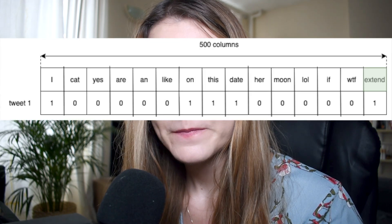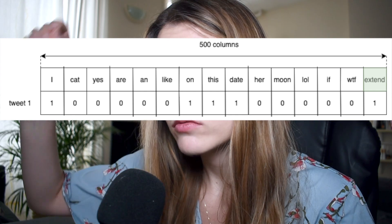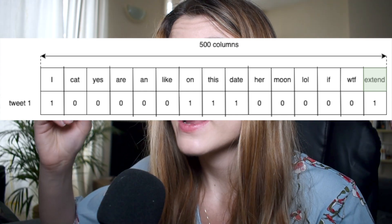So let's have a look at tweet number one. If the word 'extend' appears in that tweet, you mark how many times — once, so you put one. Then the next word, 'cat' — it doesn't appear in this tweet, so you put zero. You look at the next word and the next word and mark the frequency of how many times each word appeared in a tweet. You do it for all tweets — obviously not manually, you do it in Python — and that's how Bag of Words turns your tweets into vectors.